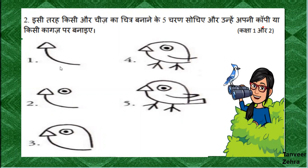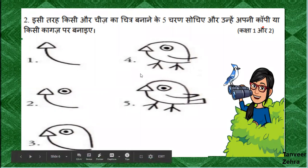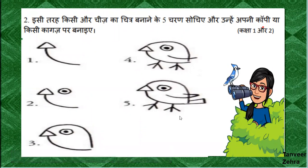I have made a bird for you, and it is only in 5 steps. First step, I have made a design. Then I have made eyes. Then the face, then the body, then the pair of wings. And this is ready — our bird is ready in 5 steps.